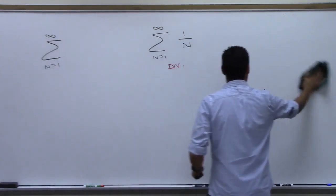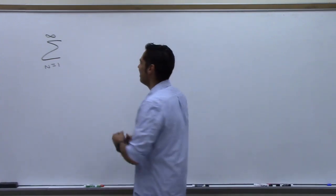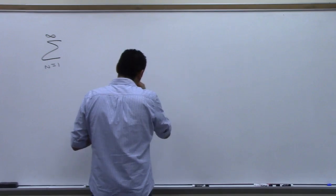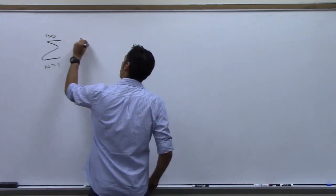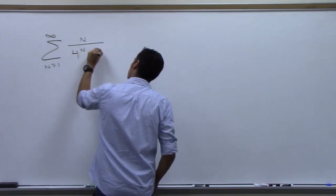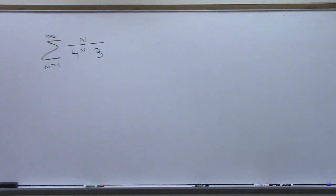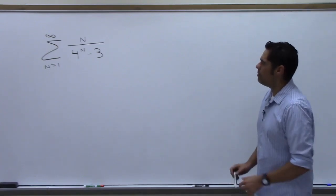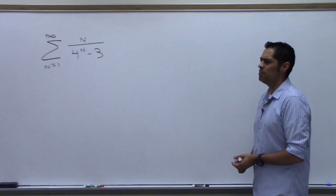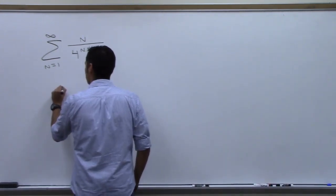Let's try another one: the sum from n=1 to infinity of n over (4^n − 3). Is this a geometric series? Maybe we should do the nth term test first so we don't get trapped.